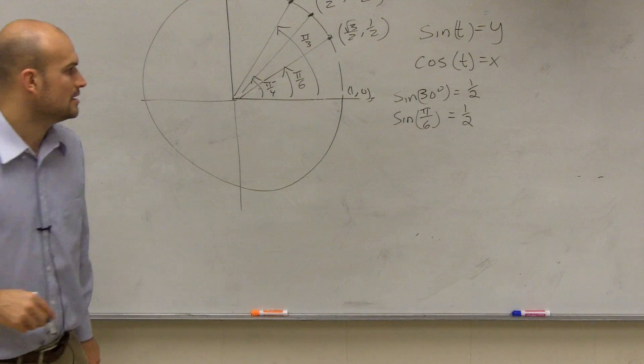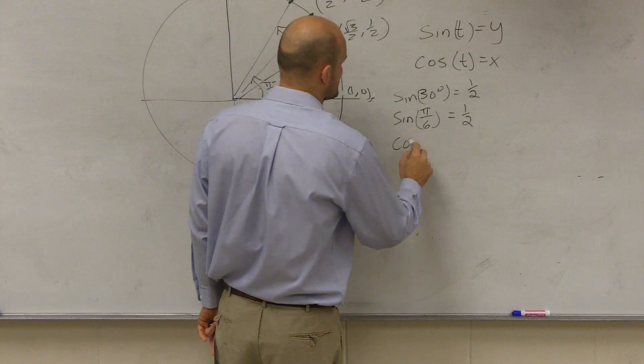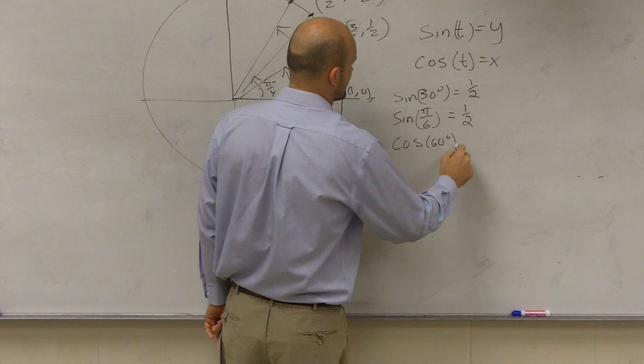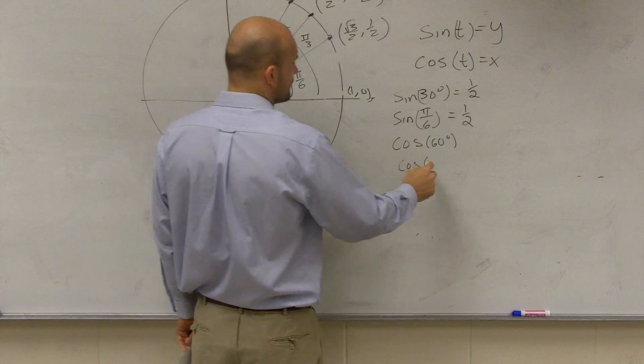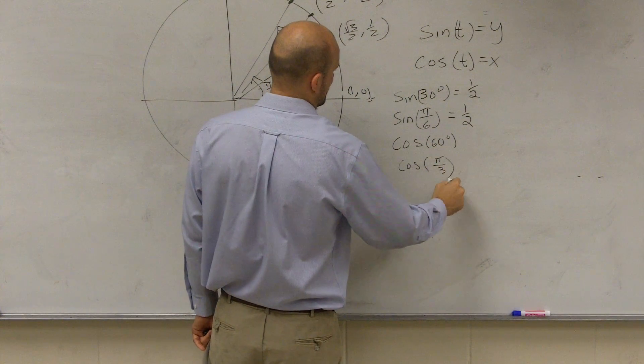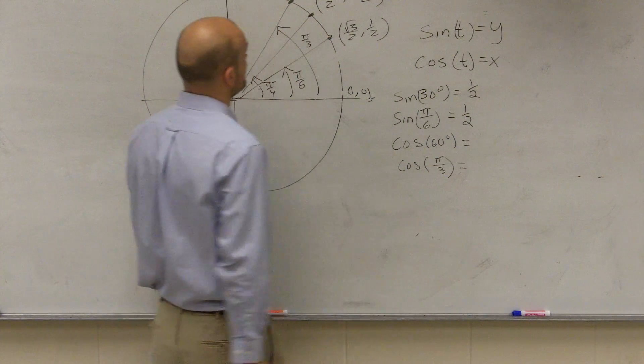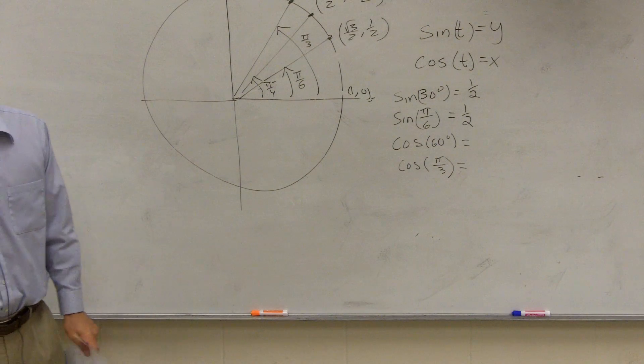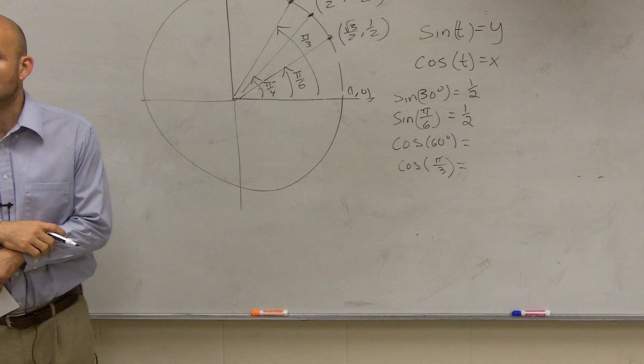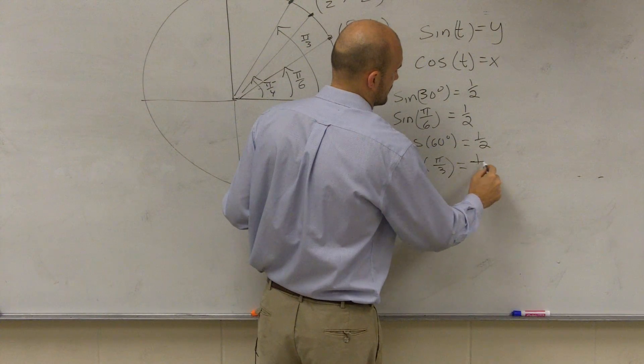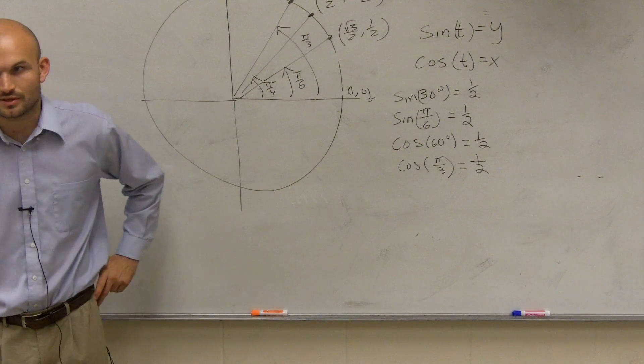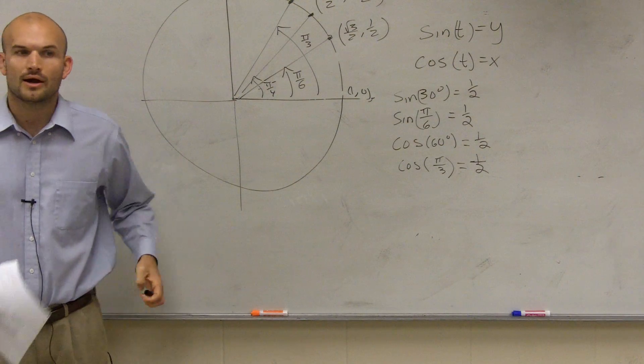Then, by writing all this stuff down, the next thing you should have noticed, Lauren, is if I say what is the cosine of 60 degrees, or what is the cosine of pi over 3? And that angle was what? 1 half, right? So those are equal to each other.